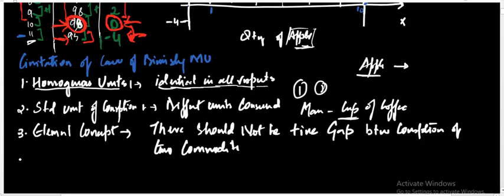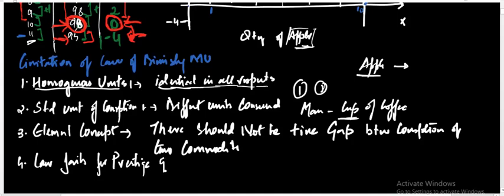The fourth limitation is that the law fails for prestige goods. For luxurious or prestige goods, as more and more is given to a particular consumer, their utility will increase rather than fall.